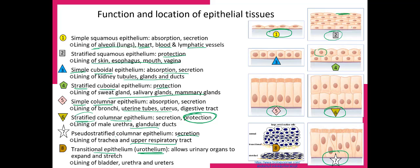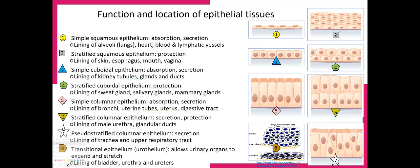Transitional epithelium is also called the urothelium and is found in the urinary tract. It allows the urinary organs to expand and stretch depending on the volume of urine present. Protection is the top function of stratified epithelium, whereas simple epithelium is involved in absorption and secretion. As we go through the course, we will examine each type of epithelium as we cover the organ systems.